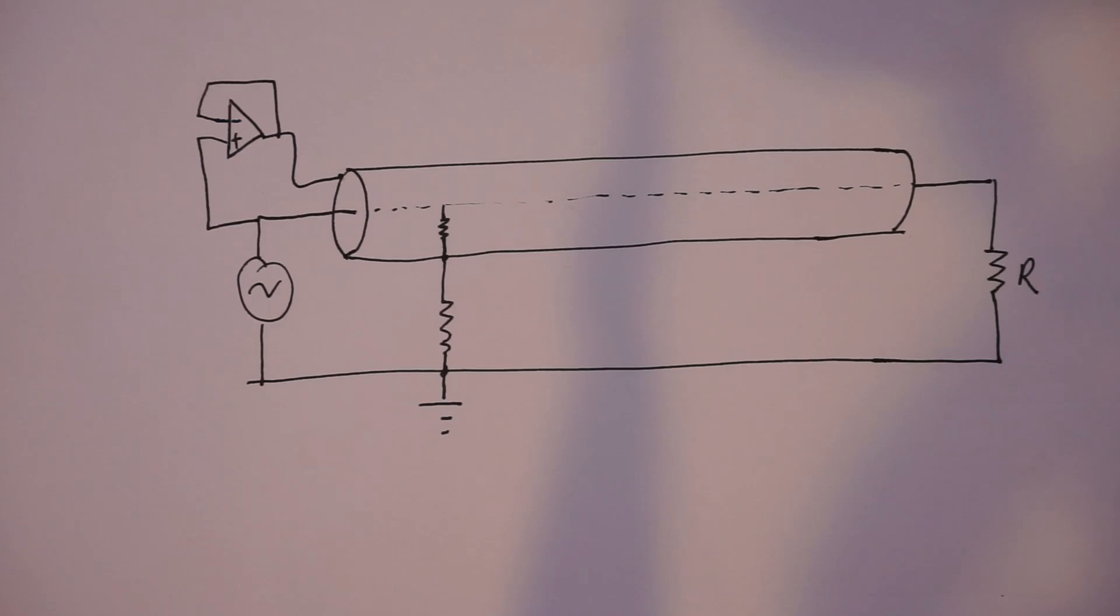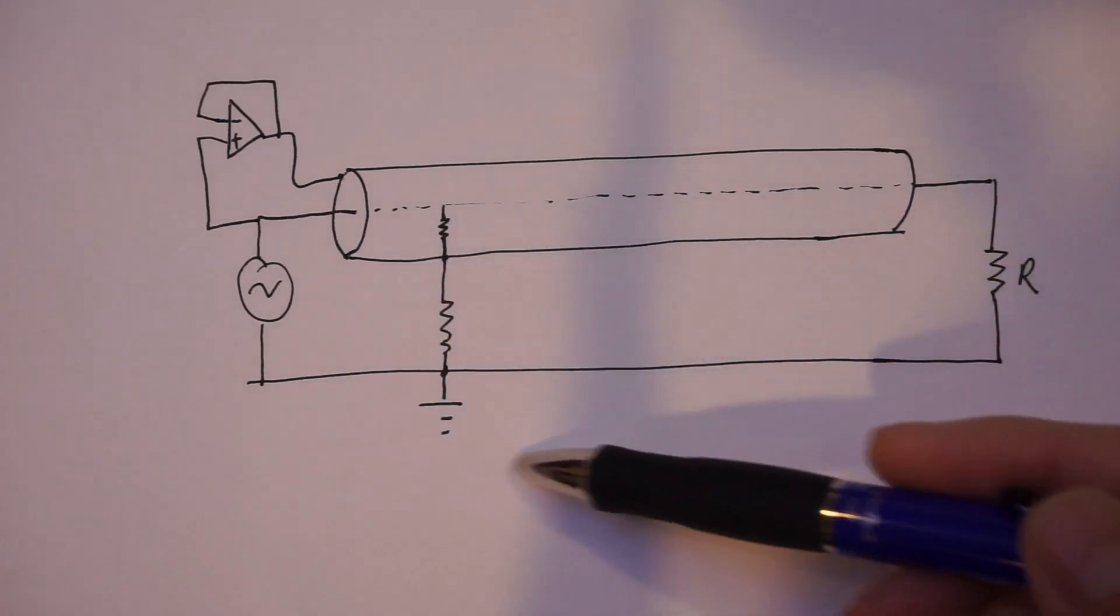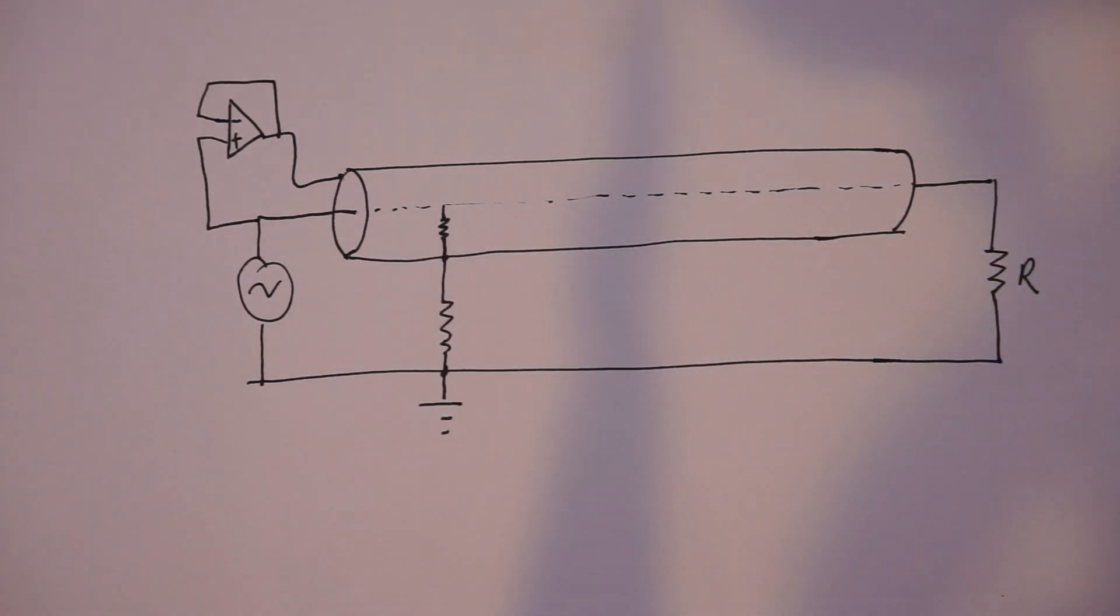Now the guard may well leak current into the outer shielding in the triax cable scenario or leak current into the ground in this coax cable scenario, but it does not affect measurement as the current is sourced by the voltage follower and is not seen by the signal carrying conductor in the middle here. This in effect gets rid of the leakage resistance and capacitance of the coax cable.